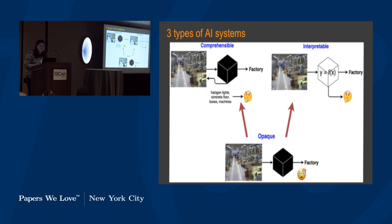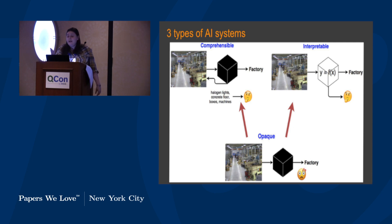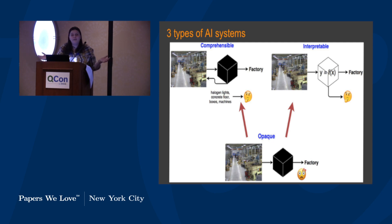Here is a way to classify types of AI systems based on their levels of explainability, using a picture of a factory. The system is trying to identify this as a factory. In all three cases it does so successfully, but in different ways. The first type, starting at the bottom, is opaque or black box systems — you feed the program an image, it outputs 'factory,' and you have no idea how it arrived at that conclusion.